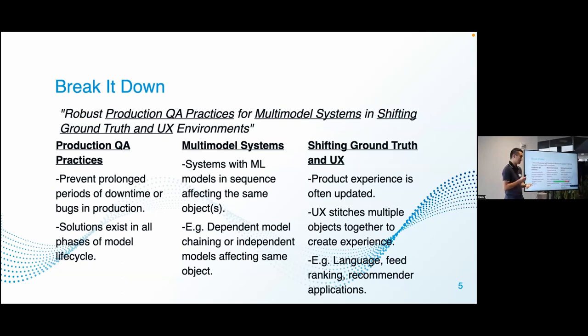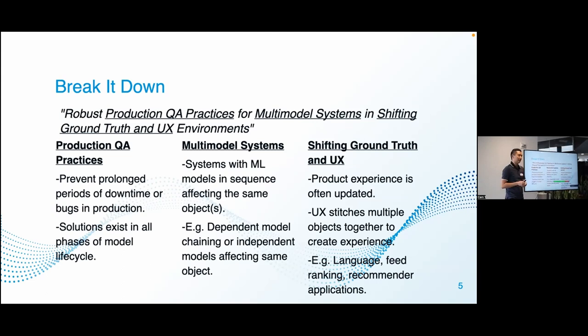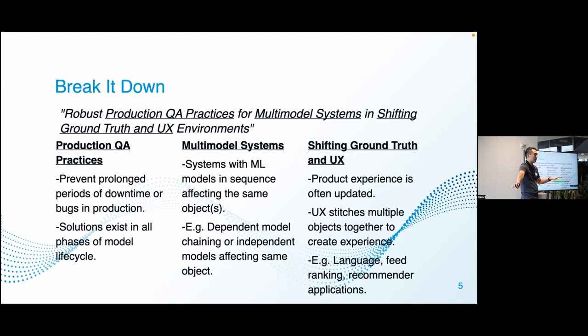There are solutions that exist in all parts of the stack, not just in production, so you have to be very strategic and deliberate about where you put quality checks. In multimodal systems, you usually have more complicated setups — models in sequence where input goes in, output comes out, and feeds into another model. If you have an error downstream, you have to figure out where upstream it originated. Another flavor is independent models all acting on the same object — if one thing goes wrong, you have to figure out which model caused it.